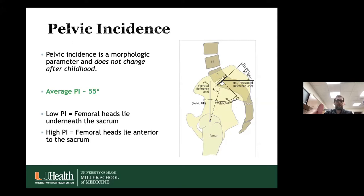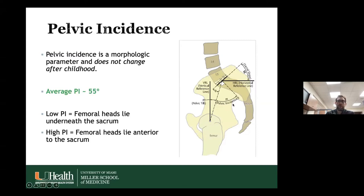Pelvic incidence is probably the most important parameter to know. It's morphologic and does not change after childhood. Morphologic studies have shown the average pelvic incidence is about 55 degrees, which matches the lumbar lordosis. To measure it, you draw a line from the center of the femoral head to the midpoint of the superior end plate of the sacrum, and a line drawn perpendicular to that.